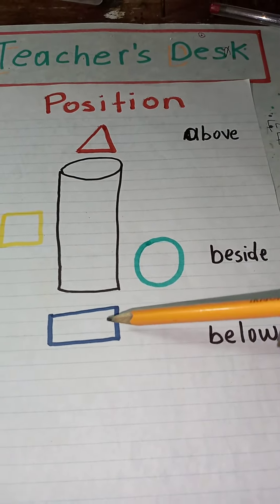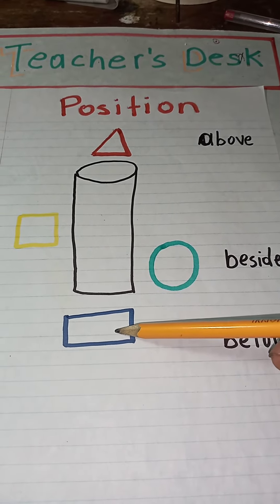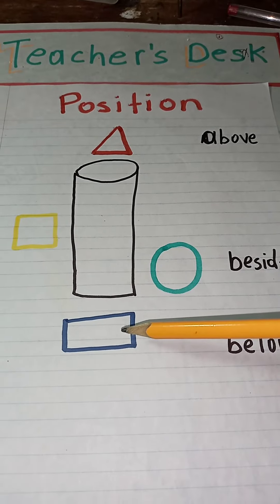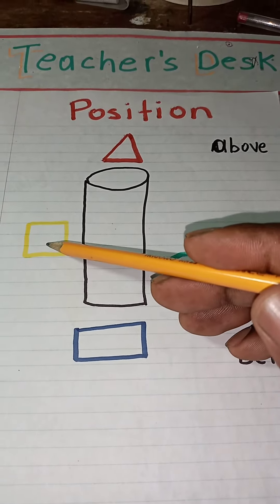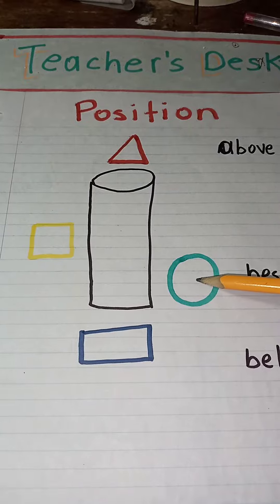And where is the rectangle? By doing this, the child is also learning shapes. Here I have a triangle, a square, a rectangle, and a circle.